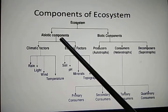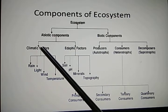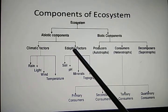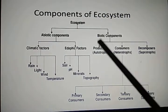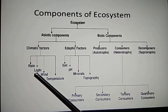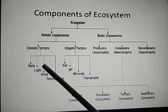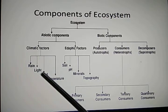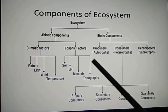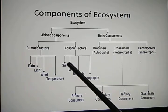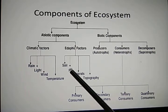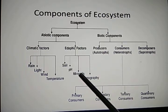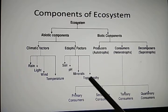Now we will go to the abiotic factors. They are of two types: climatic factors and adaptive factors. Climatic factors are normally rain, light, wind, temperature, and sunlight. Adaptive factors are all environmental factors such as soil, the pH value of soil, rainwater, mineral content of the area, and topography of that area.